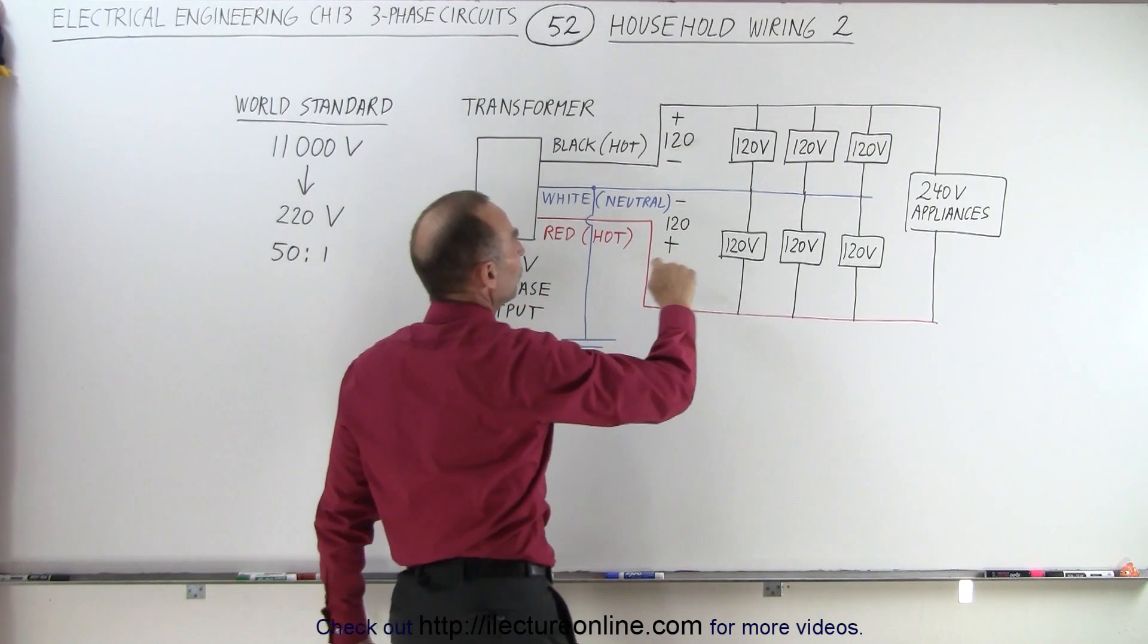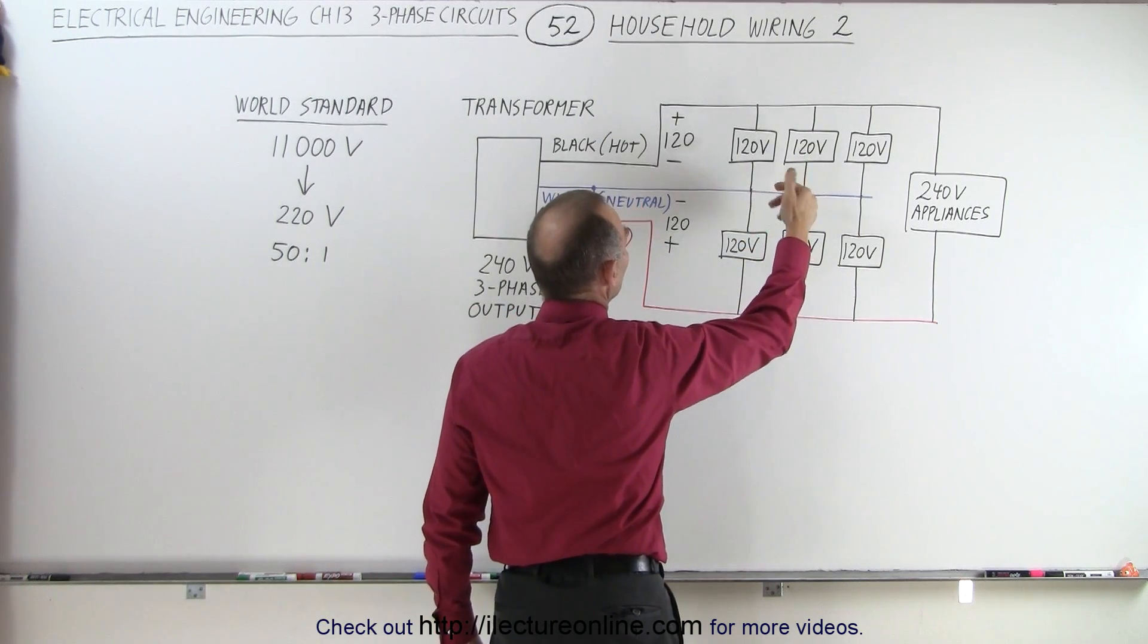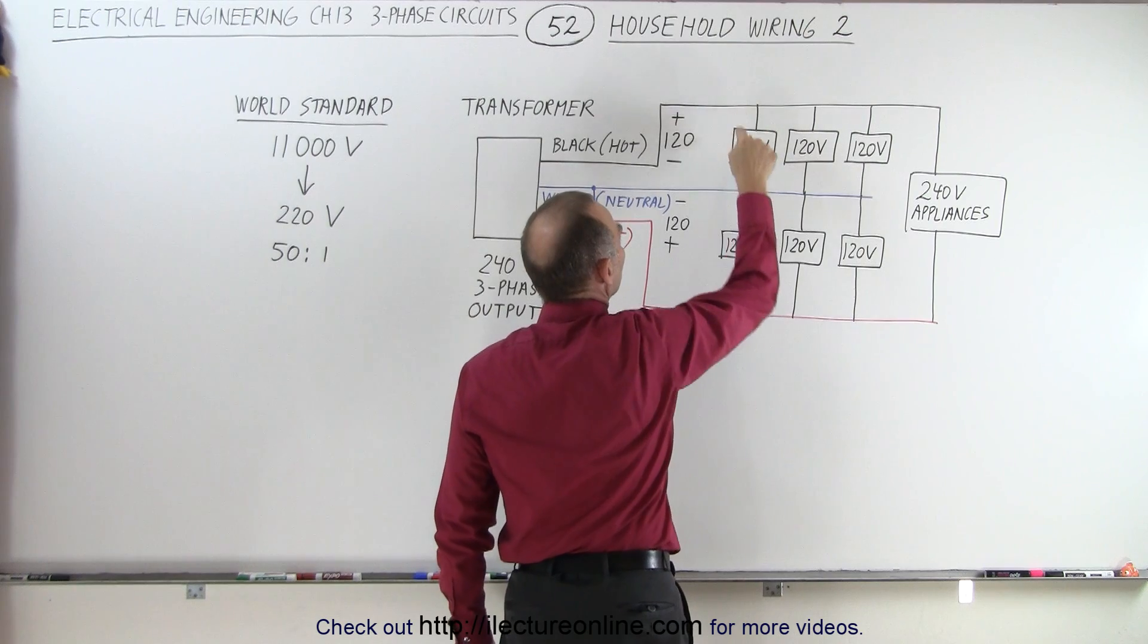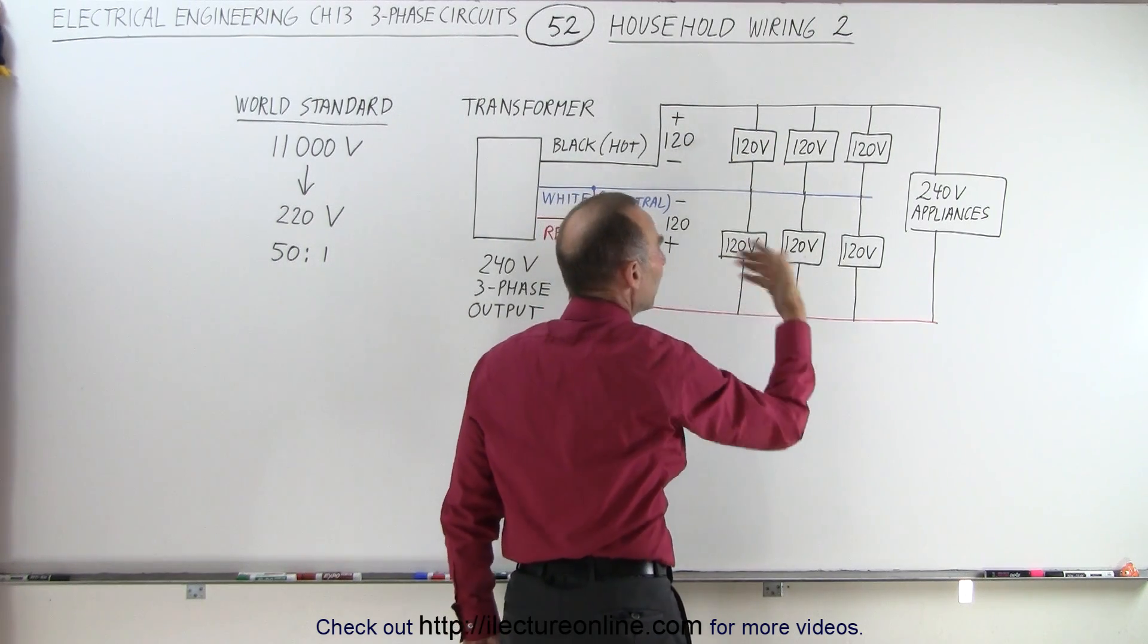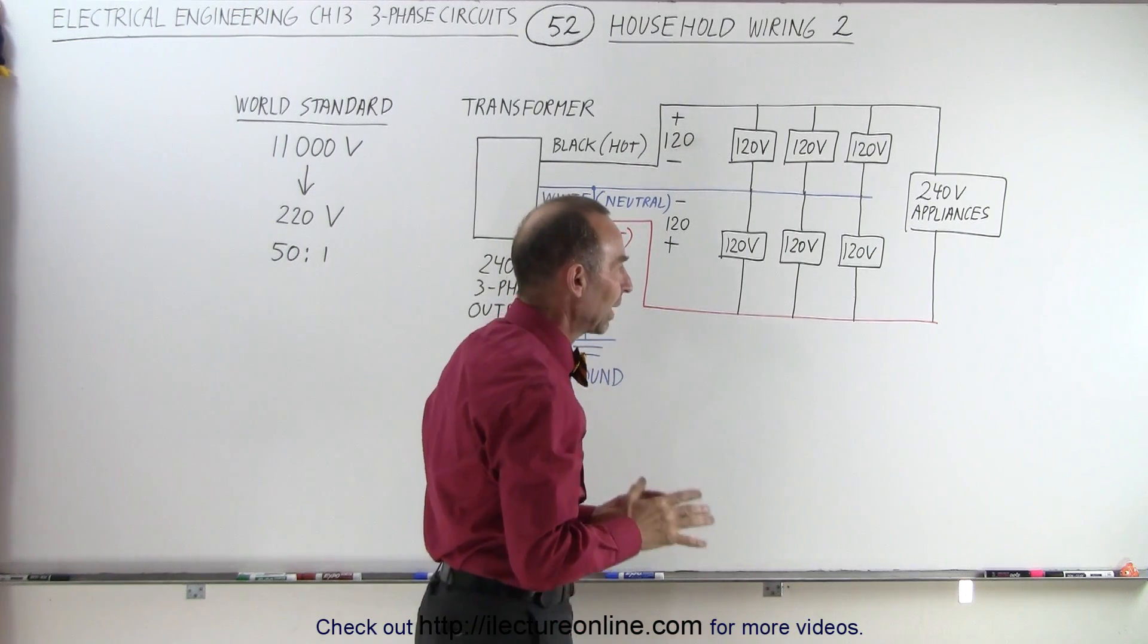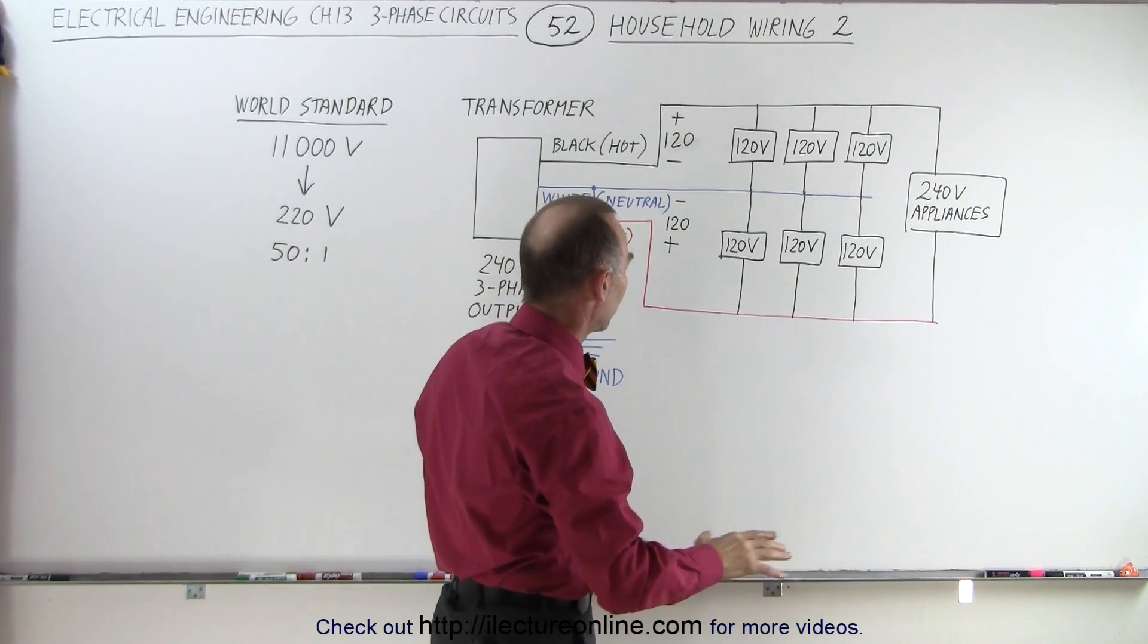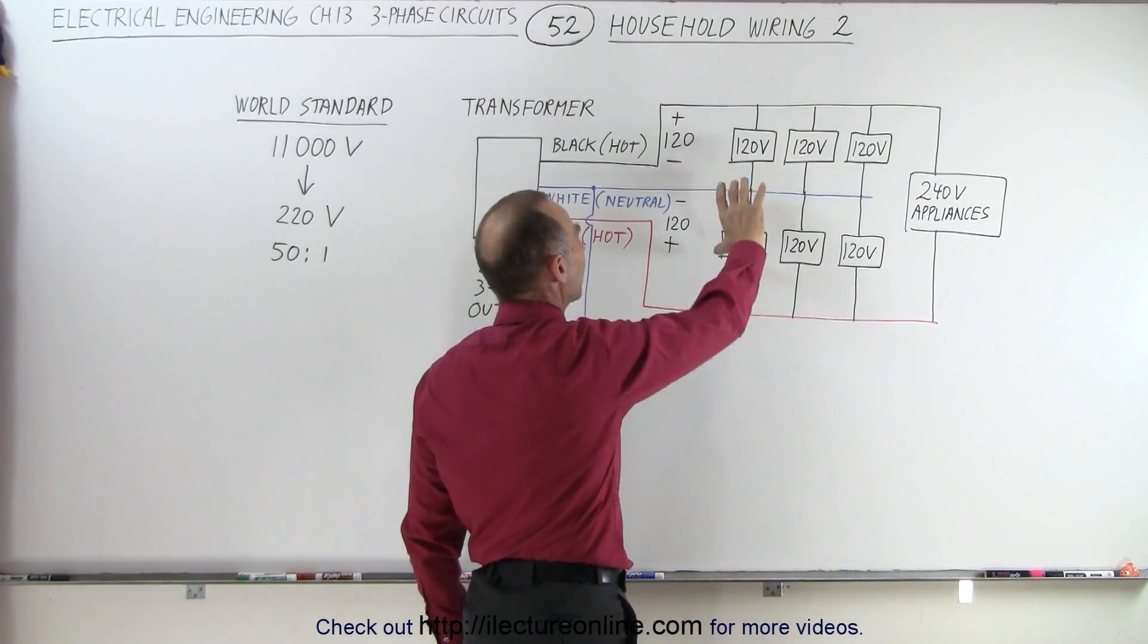When it goes into our house, notice that the hookup on the appliances, if they need 120 volts, is from one hot wire to the neutral, from black to white or from red to white depending upon how you want to connect it. So we have a lot of different lines running to the house that can have any one of these connections.